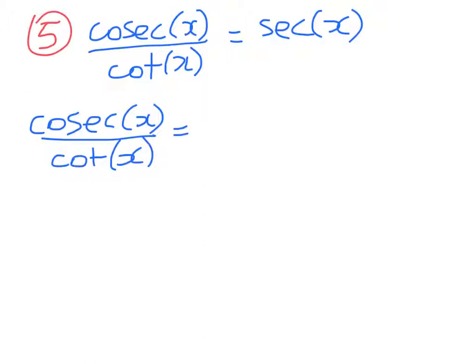Right, cosec(x) is equal to 1 over sin(x) divided by cot(x). So we're dividing by cos(x) over sin(x).